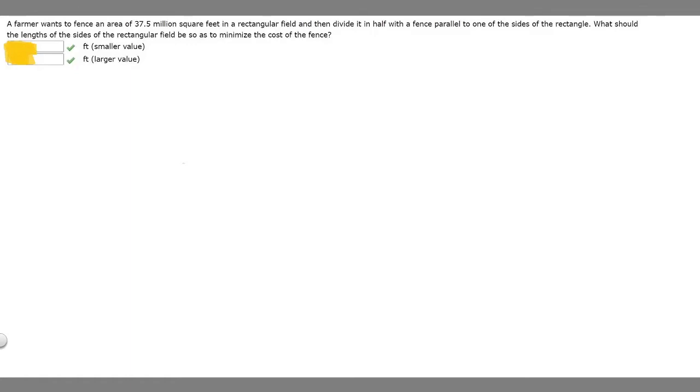In this problem, we're told that a farmer wants to fence an area of 37.5 million square feet in a rectangular field and then divide it in half with a fence parallel to one of the sides of the rectangle. What should the lengths of the sides of the rectangular field be so as to minimize the cost of the fence?